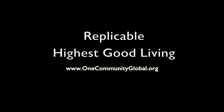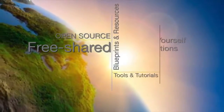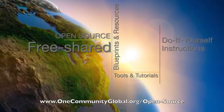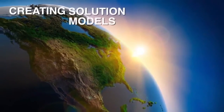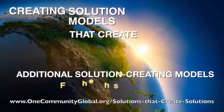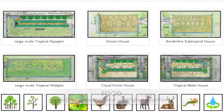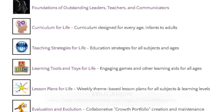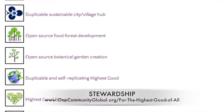Replicable Highest Good Living — One Community Weekly Progress Update Number 139. One Community is a 501c3 non-profit organization creating open source and free shared blueprints and resources, tools and tutorials, and do-it-yourself instructions for Highest Good Living — creating solution models that create additional solution-creating models in the service of all life on this planet. This includes Highest Good approaches to food, energy, housing, education, for-profit and non-profit business creation, society, and true earth stewardship.